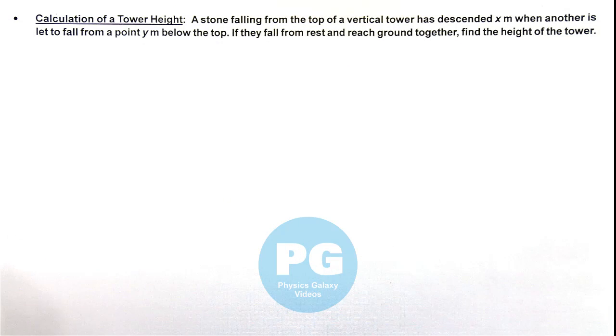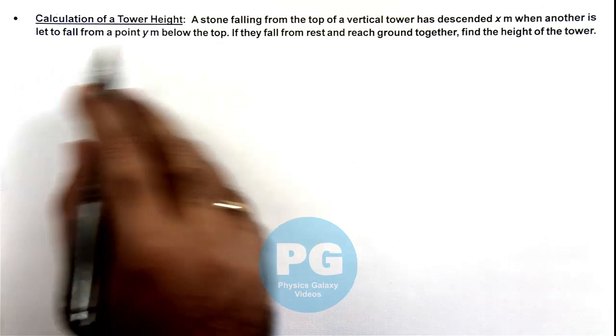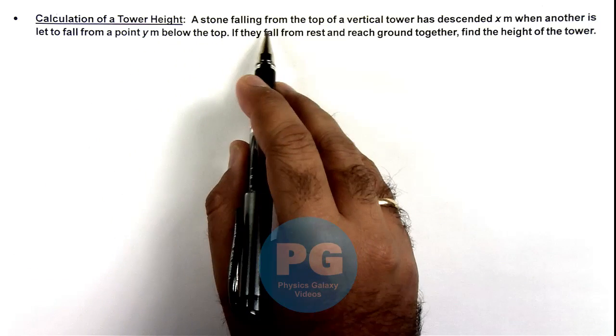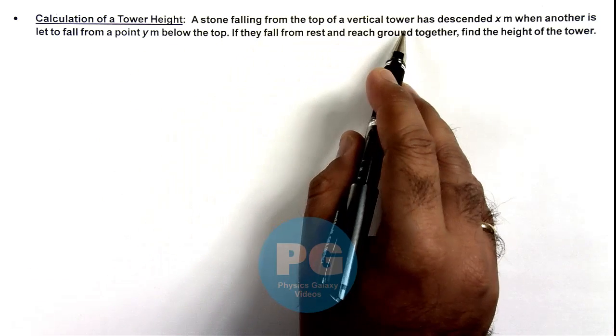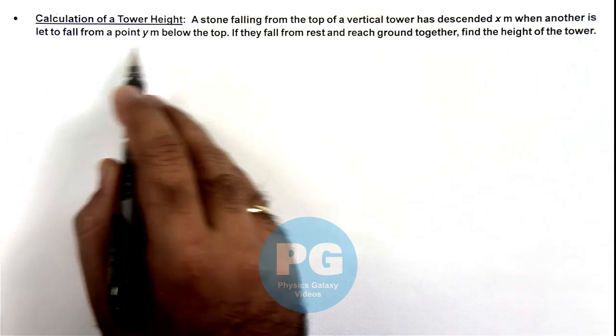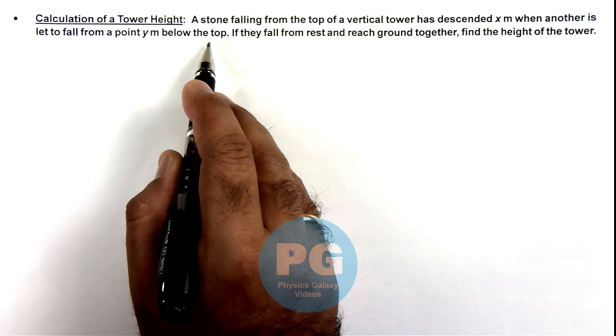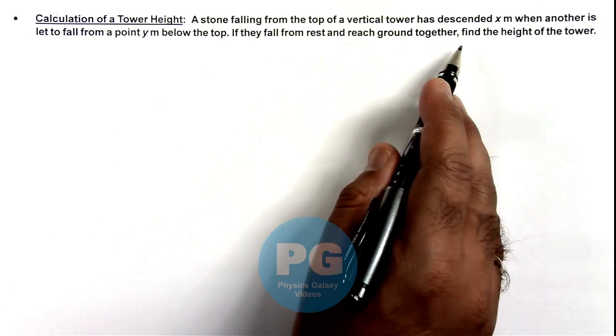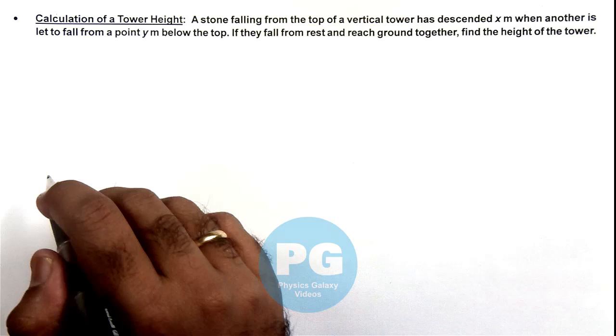In this illustration, we will discuss the calculation of a tower height. We are given that a stone falling from the top of a vertical tower has descended x meter. Another is led to fall from a point y meter below the top. If they fall from rest and reach ground together, we are required to find the height of the tower in this situation.